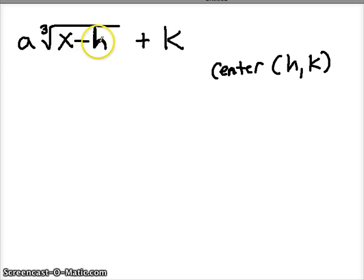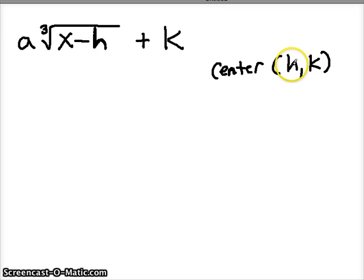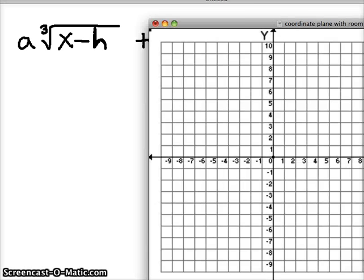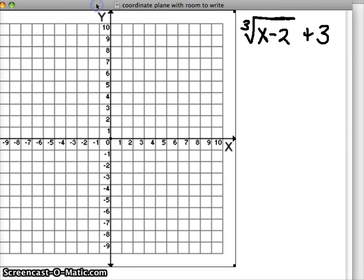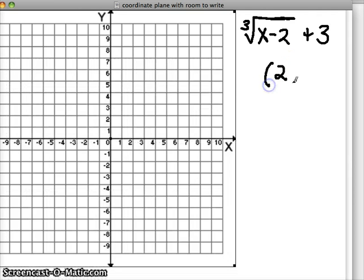Just be careful with your h because the formula says x minus h — it always wants the opposite of the h value. So if your center value is positive, it will say minus that value under the radical. If the center value is negative, it will say x plus a value. Back to our graph: the h is always the opposite of what it looks like. So if it says minus 2, my h value is positive 2. My k value will always be whatever it looks like — so my center is at the coordinate pair 2, 3.